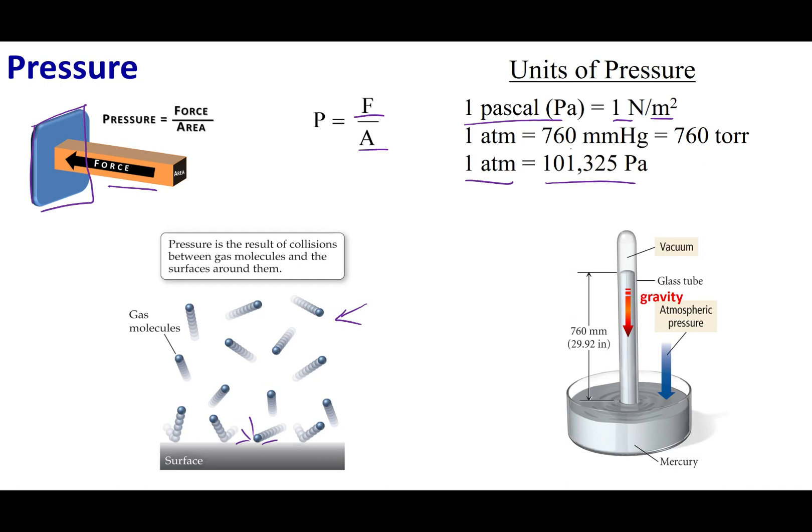So, we're going to go ahead and stick with the units of atmosphere. An atmosphere is equivalent to 760 millimeters mercury or 760 torr. I will give you these conversion units on your information sheet.